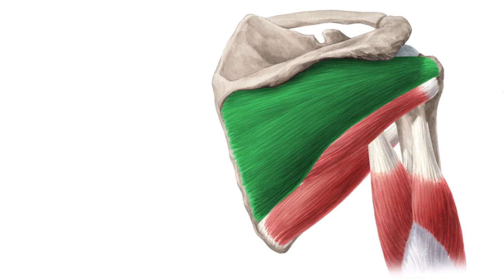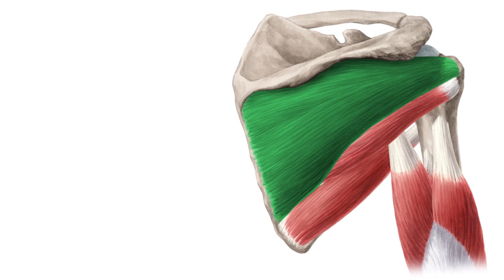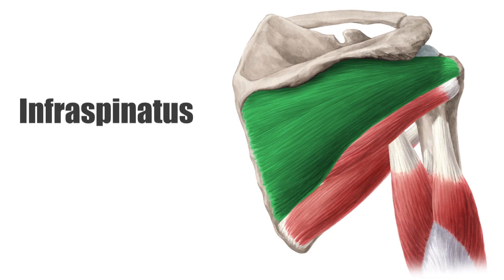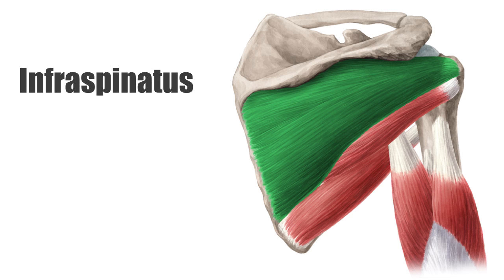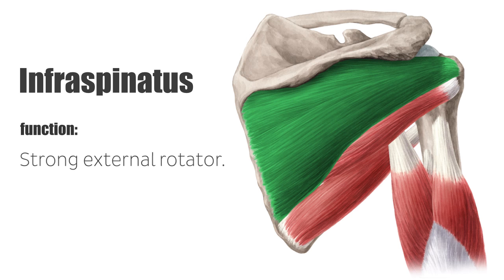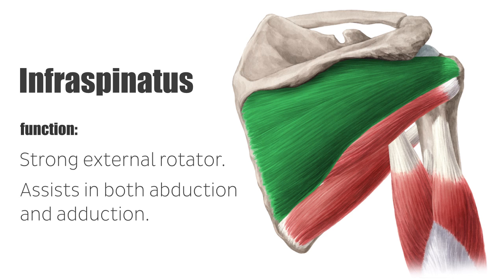All the muscles in the rotator cuff fulfill different individual functions. The function of the infraspinatus muscle is to be a strong external rotator, and additionally, to assist in both abduction and adduction.